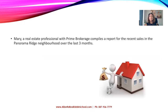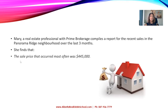Now how does this apply to real estate sales? For example, Mary, a real estate professional with Prime Brokerage, compiles a report for the recent sales in the Panorama Ridge neighborhood over the last three months. She finds that the sale price that occurred most often over the last three months was $445,000. This is the price that most of the houses sold at — the number that appeared most often.